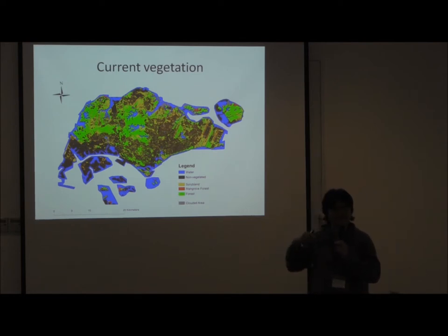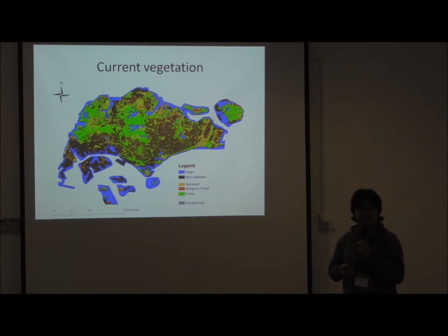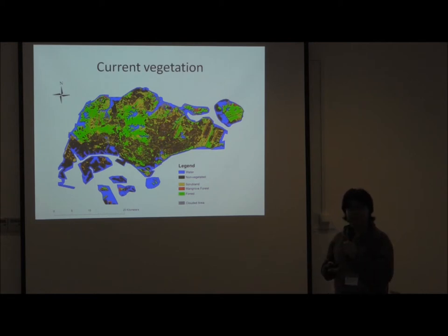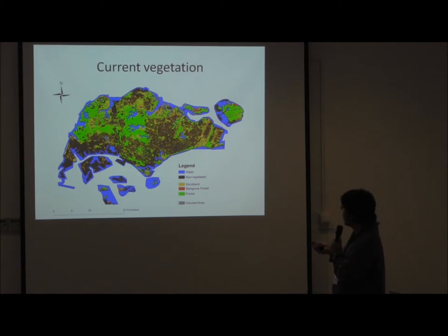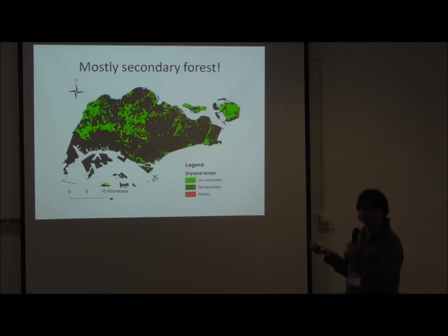This is the current vegetation map, produced through satellite remote sensing using SPOT-5 imagery. Based on four bands — red, blue, green, and infrared — we can identify where the forests are. Although there is a lot of green, primary forest is only restricted to the Central Catchment Nature Reserve and the Mandai mangrove reserve.